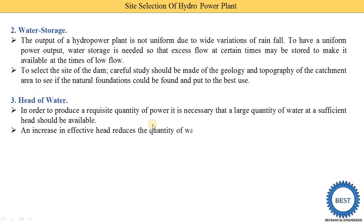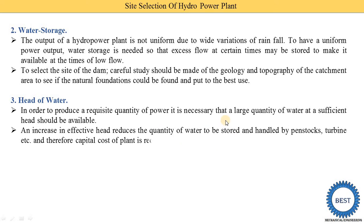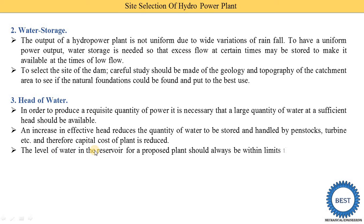An increase in effective head reduces the quantity of water to be stored and handled by the penstock and turbine, and therefore the capital cost of the plant is reduced. The level of water in the reservoir for a proposed plant shall always be within the limit throughout the year — meaning the water level is maintained between some minimum and maximum levels throughout the year.